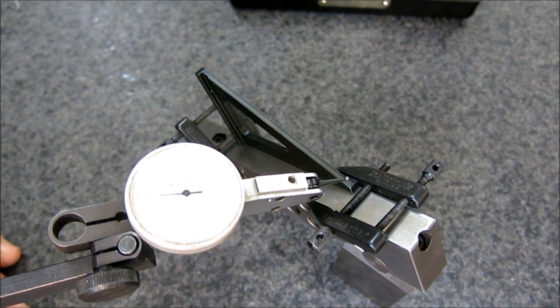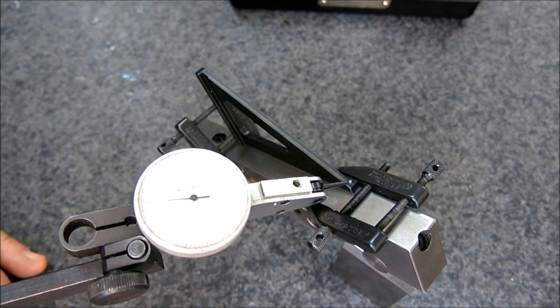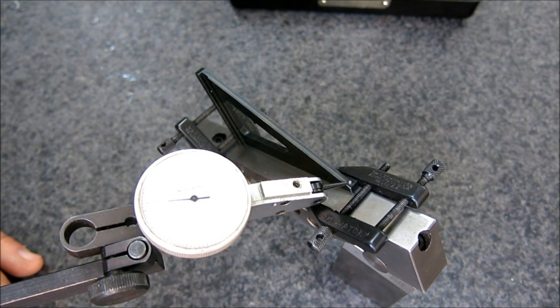So we're going to sweep the top of it there and see how it agrees there. Now this is a tenths reading indicator. So that's pretty small divisions there. That's like, I don't know, three microns or something like that, right?